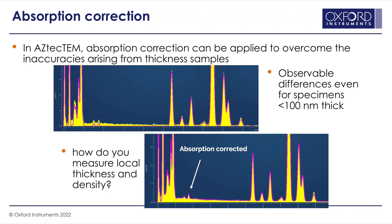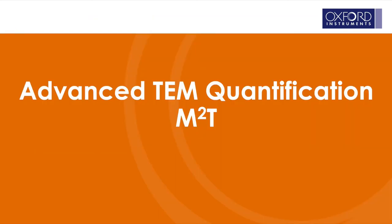However, in TEM most samples aren't completely thin. The Cliff-Lorimer approximation really applies to sub 10 nanometers, but in TEM we can be looking at samples that are about 100 nanometers. This affects quantification, as you can see here — using the Cliff-Lorimer approach to generate a theoretical spectrum, if we put a thickness of zero and don't input a density, the background isn't correct and the peaks aren't exactly at the right height. That's because your sample isn't truly electron transparent and completely thin — there will be some thickness and some density. The question is how can we measure that to get truly accurate absorption-corrected TEM quant, and that's what our M squared T advanced TEM quant addresses.